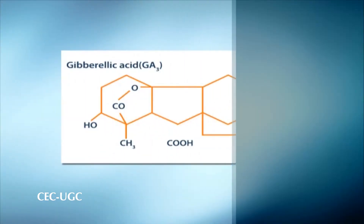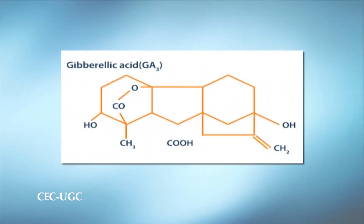This compound was found to stimulate growth when applied to rice roots. In 1954, British researchers discovered an entirely new compound from Gibberella fujikuroi and named it gibberellic acid.